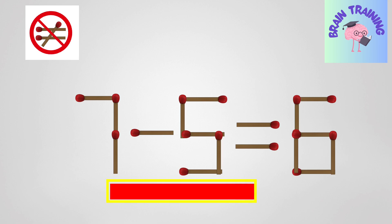Time's up. Now for the answer. The solution: remove the match from 7 to change it to 1, and add to the minus sign to change it to a plus sign. We now have 1 plus 5 is equal to 6. Perfect.